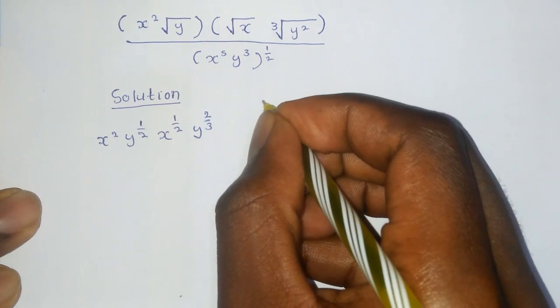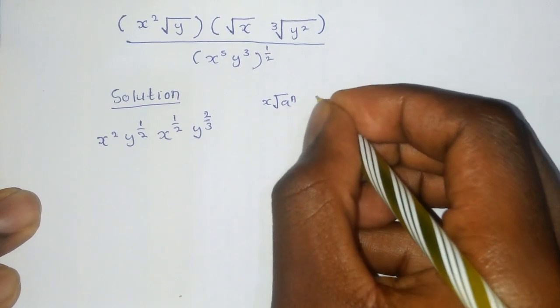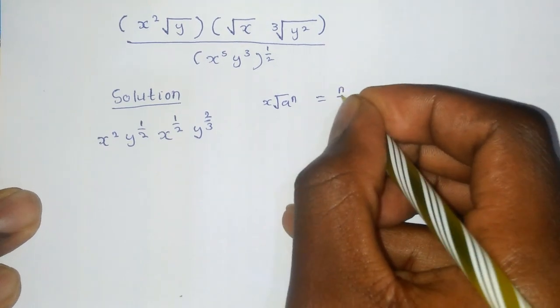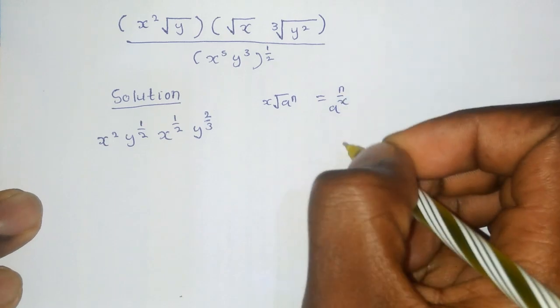Like for example, you are given x root a raised to n. This is the same as n raised to x. That is a raised to n divided by x.